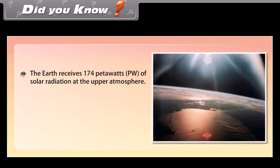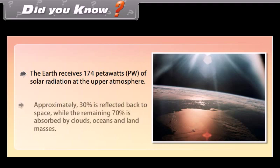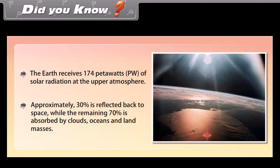Did you know? The earth receives 174 petawatts of solar radiation at the upper atmosphere. Approximately 30% is reflected back to space, while the remaining 70% is absorbed by clouds, oceans, and land masses.